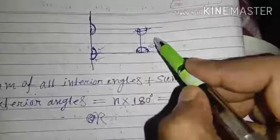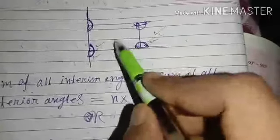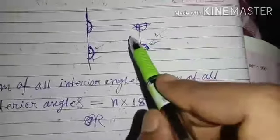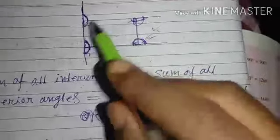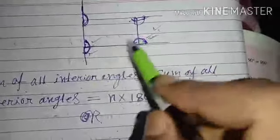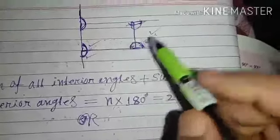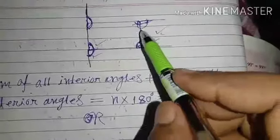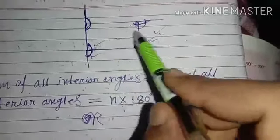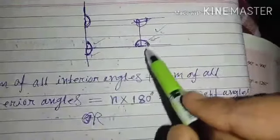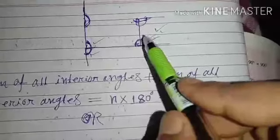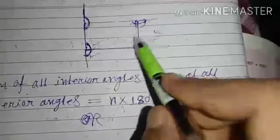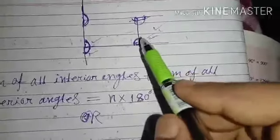In this case, we have a four-sided polygon. So the sum of all interior angles plus the sum of all exterior angles — in this case, how do we have it?